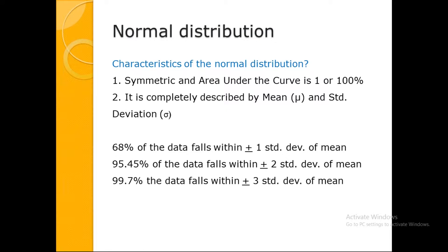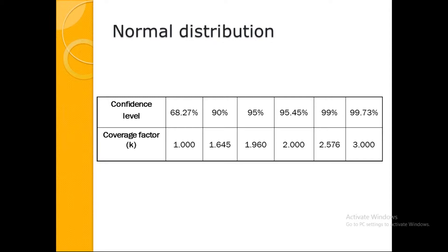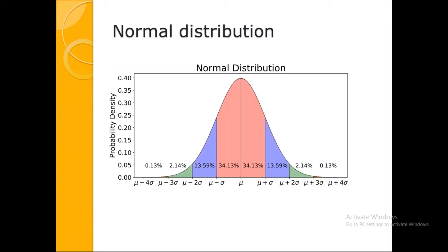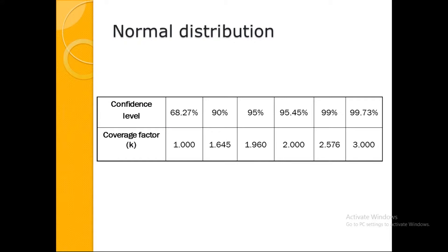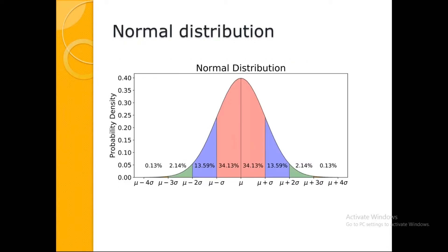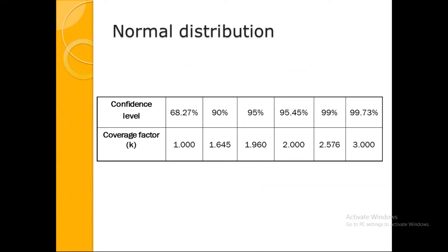The coverage factor is nothing but your standard deviation level. At one standard deviation, it is 68.27 percent area under the curve. At two standard deviations, it is 95.45 percent — meaning almost 95.45 percent of your results will fall under plus or minus two sigma. At three standard deviations, coverage is approximately 99 percent.